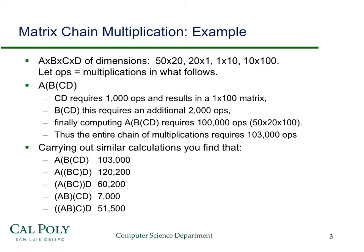Basically, the way we're going to do that is we're going to build things up one at a time so that we don't have to re-compute things. For instance, one of the first things we'll compute when we do the setup is the pairwise product — the consecutive matrix products — so C·D, B·C, and A·B. We'll compute those only once.